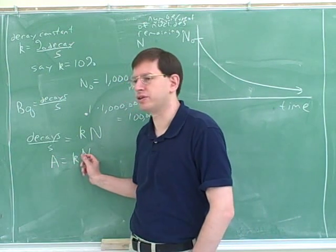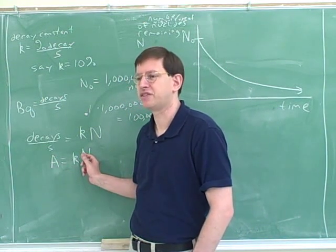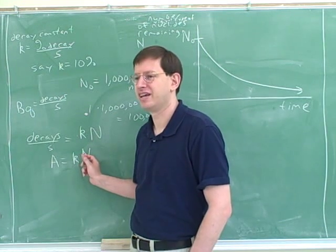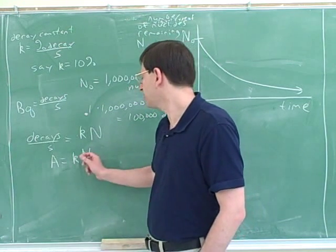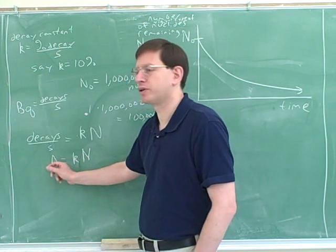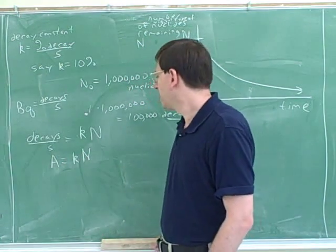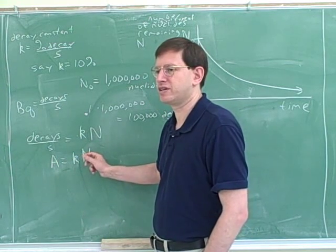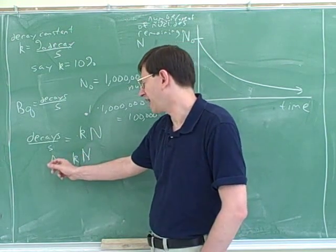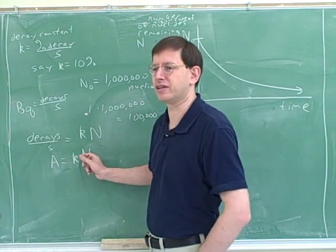Notice that the activity is proportional to the number of nucleuses. That's what this equation really tells us, right? Yeah. However many nucleuses we have, we're going to lose a set proportion of those in our activity, say 10% each time. So if the activity is proportional to the number of nucleuses, then the graph for the decay activity should look like the graph for the nucleuses.